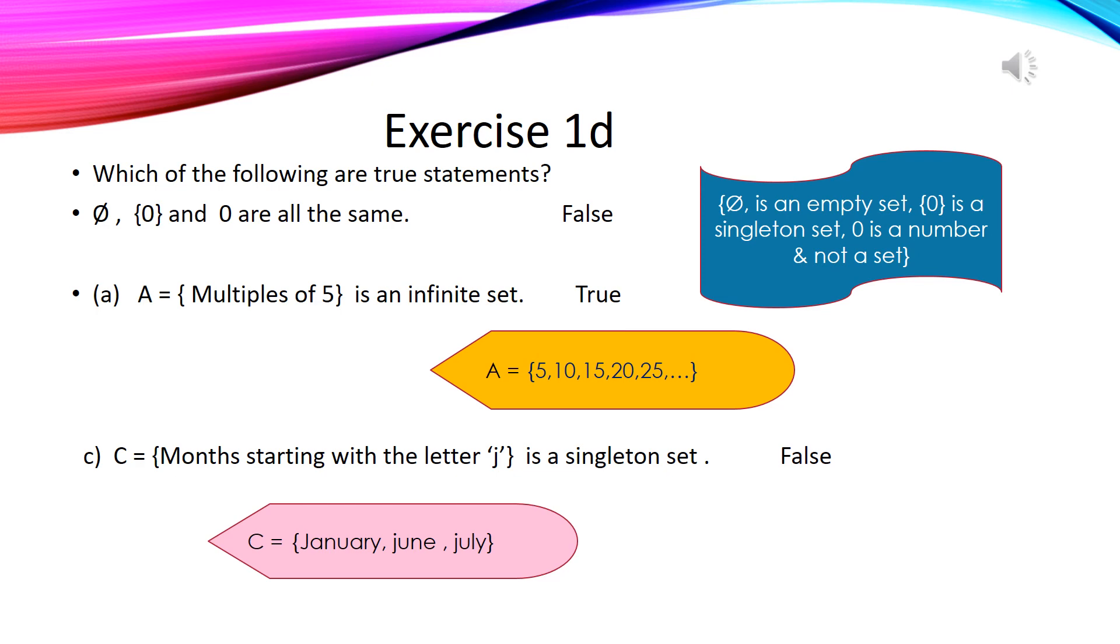In the last statement of the same exercise, we have a set of months names starting with the letter J is a singleton set. Can you guess is it true or false? Yes, it is a false statement. Because we have three names of months starting with the letter J. These are January, June, and July. It means that given set is not a singleton set.